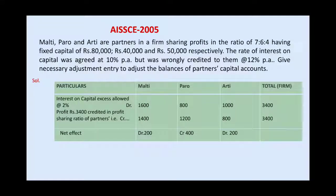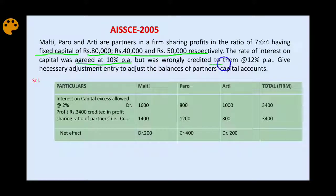Now let us see one more question from 2005. Malati, Paro, and Arati are partners sharing profits in the ratio 7:6:4 with fixed capitals of 80,000, 40,000, and 50,000 respectively. The rate of interest on capital was agreed at 10% per annum but was wrongly credited to them at 12% per annum. Give the necessary adjustment entry.